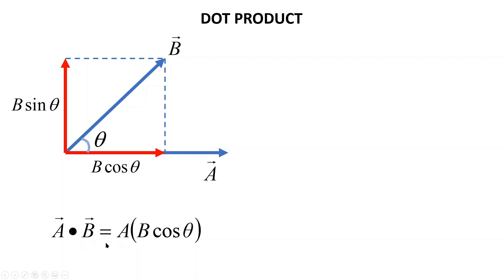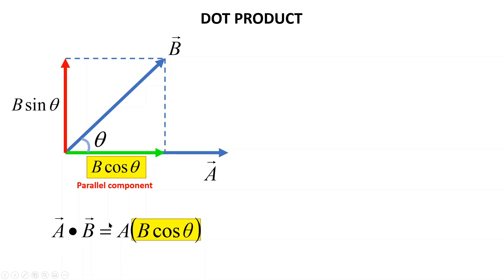The general formula for dot product is a dot b equal to a b cos theta. The term b cos theta is the parallel component to vector a. So dot product a dot b means we use the parallel component b cos theta to multiply with vector a.